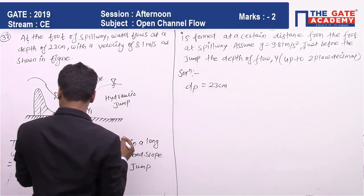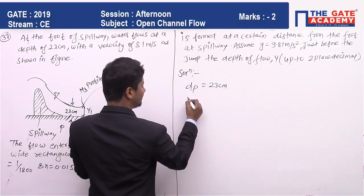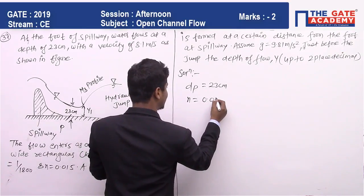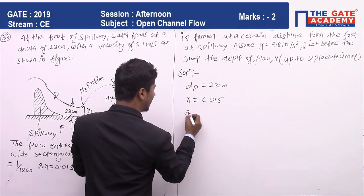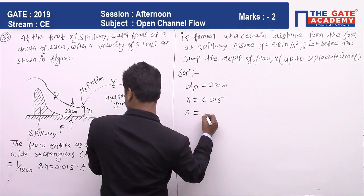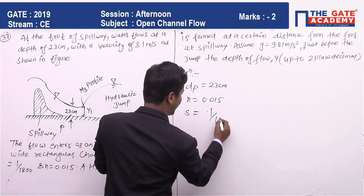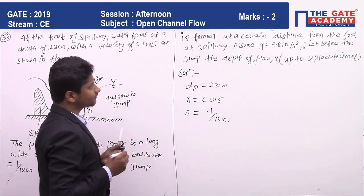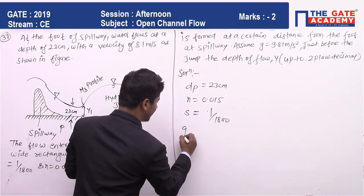n = 0.015, slope S = 1/1800, and g = 9.81.